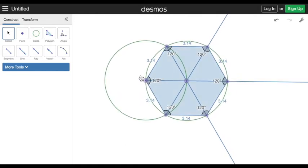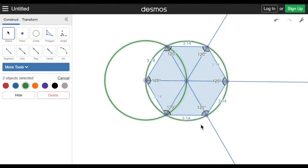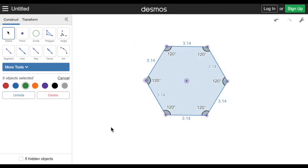And then I'm going to, as usual, hide unnecessary things, and there we go, we have a regular hexagon.